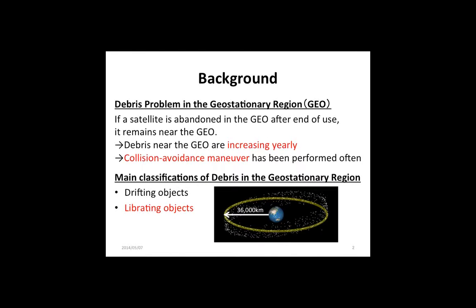First of all, let me talk about the background of my research. The geostationary region is a unique natural resource that is useful for mankind's activity. The collision probability in the GEO is relatively low compared to low Earth orbit. However, if a satellite is abandoned in the GEO after the end of use, it remains near the orbit region. So debris near the GEO are increasingly eerie, and therefore collision avoidance maneuvers have been performed often.